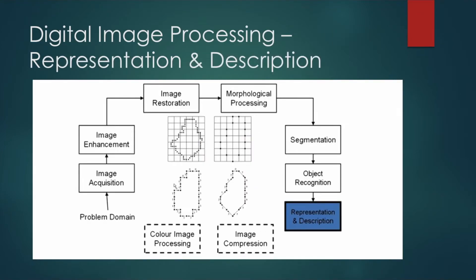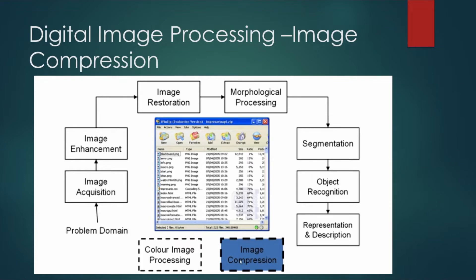Then we have representation and description. Here we want to find the matching points — to find two images that are exactly similar or not, and also to stitch two different images into one image. That kind of representation and description allows you to combine images.